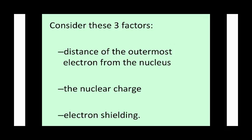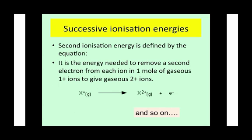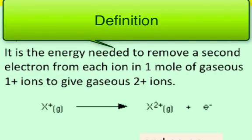So we've removed one electron — what about if we want to remove another electron? The second ionisation energy would be the energy required to remove the second electron. The definition would be the energy needed to remove a second electron from each ion in one mole of gaseous one-plus ions to give gaseous two-plus ions.